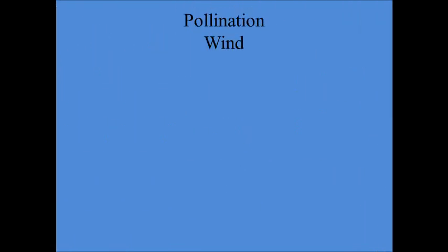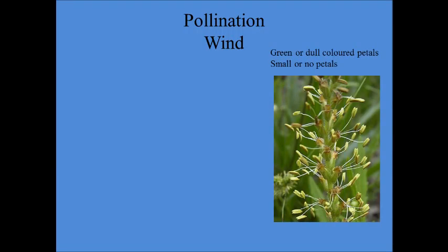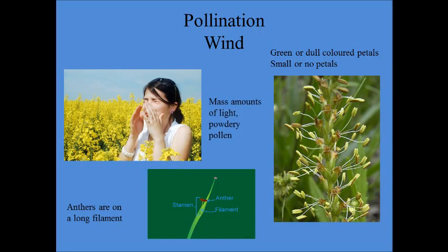For wind pollination to occur, plants have to have green or dull colored petals and either small or no petals present. Typically, anthers are on a long filament stretching into the air so that mass amounts of light, powdery pollen can be released. They also lack scent and nectar.